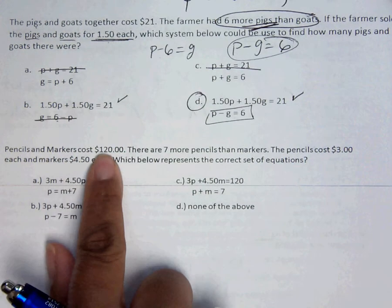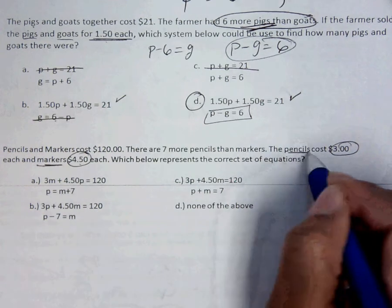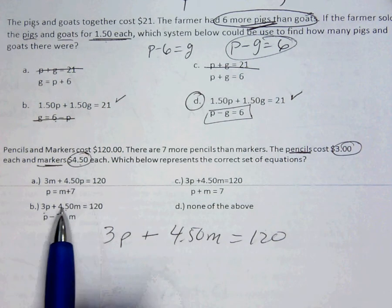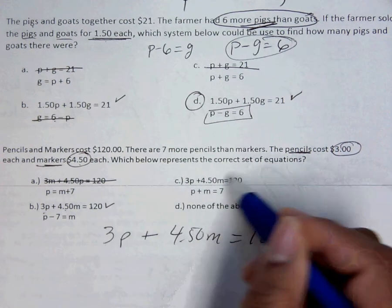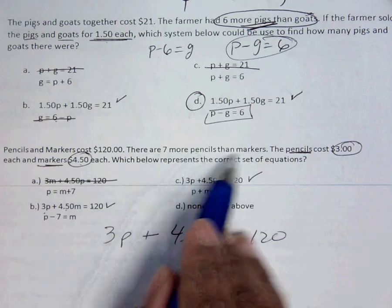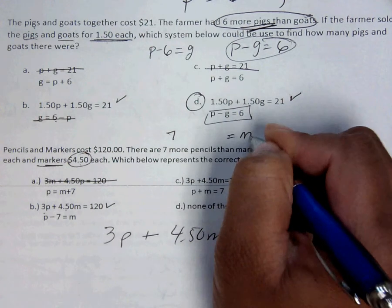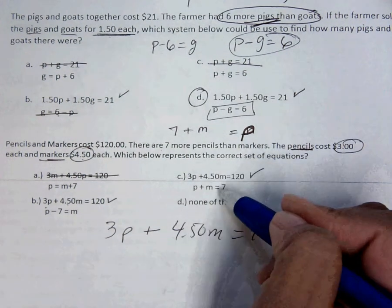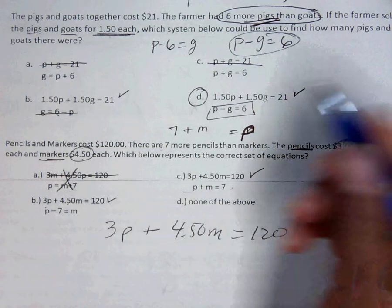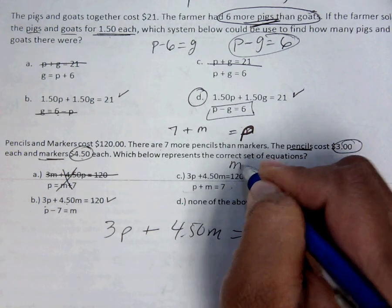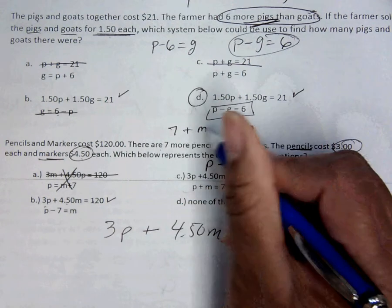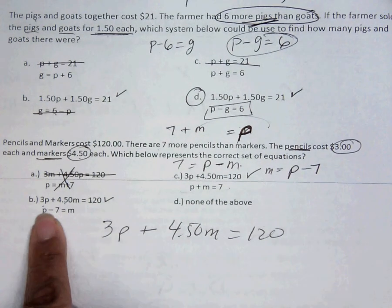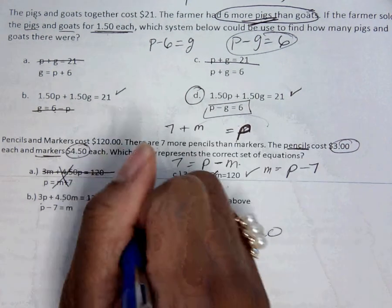Last but not least. The pencils and markers cost $120. But it says that the markers are $4.50 each and the pencils are $3 each. So 3P plus $4.50M has to be $120. Then 7 more pencils than markers. So 7 more pencils, that's what it's going to equal, than markers. Now the two versions, because I noticed that this one doesn't match and that one doesn't match. So I can move my M over and have P minus M. Or move the 7 over, so P minus 7 equals M. And I see that P minus 7 does equal M. But P plus M equals 7 is not accurate. So the answer is B.